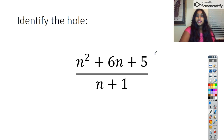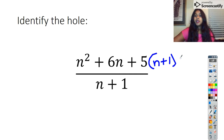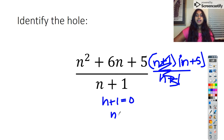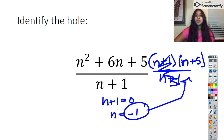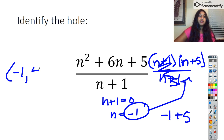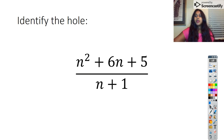Here we have another where we're identifying the hole. We already factored this one out earlier: N plus one times N plus five over N plus one. We get to cancel out those N plus ones. I set N plus one equal to zero and discover N equals negative one. I take that and plug it back in: negative one plus five equals four. So there is a hole at negative one comma four.